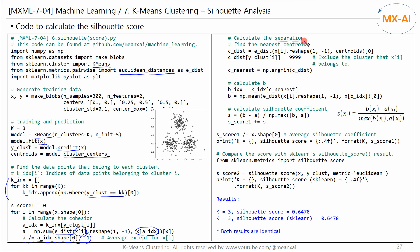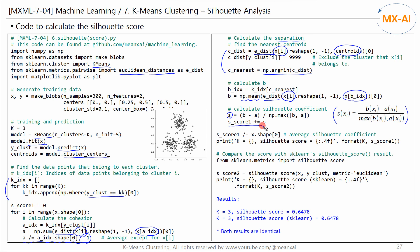Now calculate the separation. First, find the nearest cluster to data point xi by calculating distances between xi and the centroid of all clusters, excluding the cluster xi belongs to. Calculate the distances between xi and all data points belonging to the nearest cluster, and the average of these distances is the separation. Next, calculate the silhouette coefficient using this formula, accumulate it for all data points, and at the end of the for loop compute the average — this is the silhouette score.